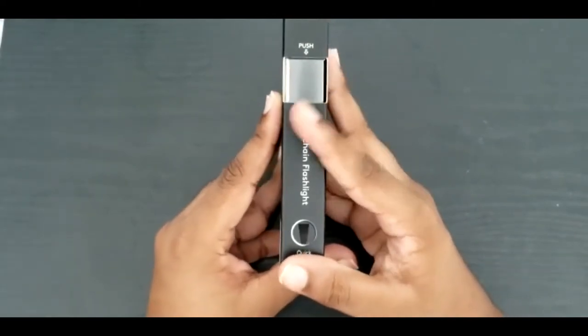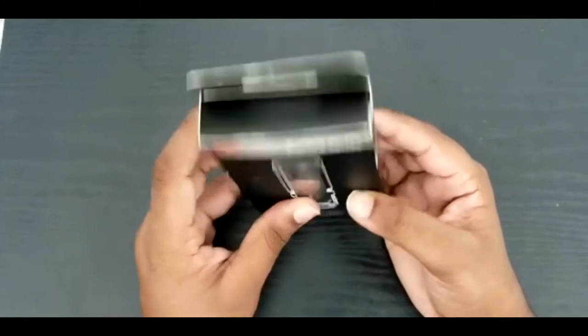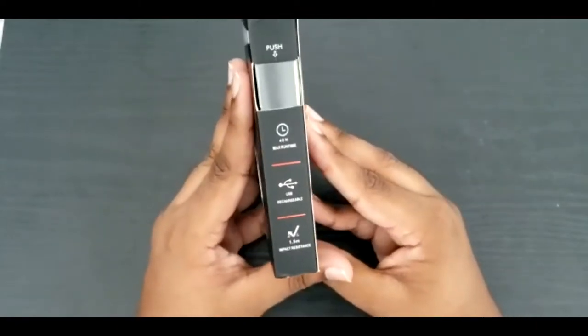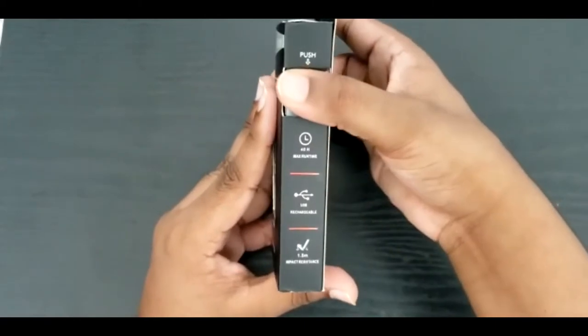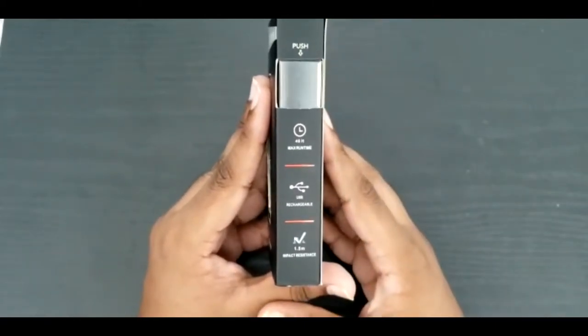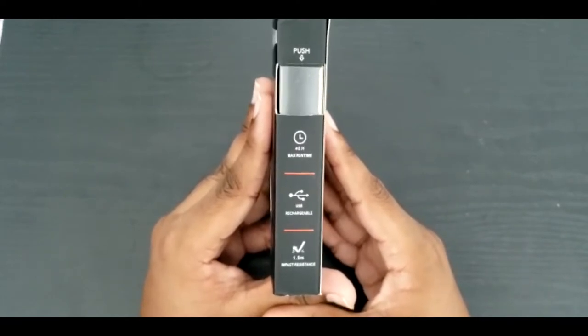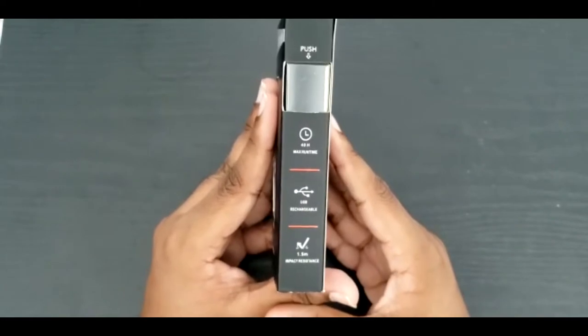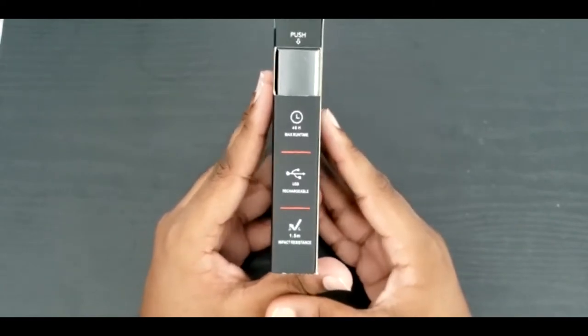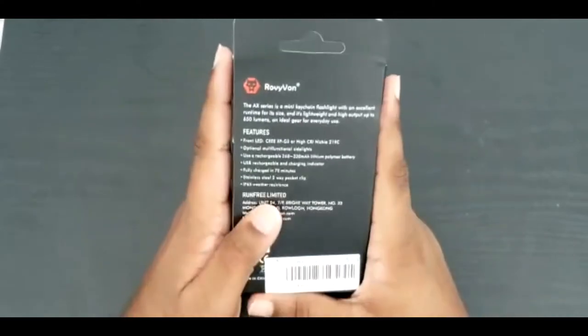On the sides here it says push to open keychain flashlight, quick access. On this side it says push here, so two buttons you push and then pull up. It has a 40 hour max runtime, it's USB rechargeable, and it has a 1.5 meter impact resistance. That's pretty cool.